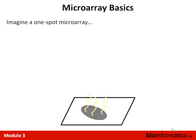To make sure everybody's clear on how a microarray works — imagine a one-spot microarray. The glass slide is called the chip. The DNA extending off the chip is called the probe. And the spot containing a number of identical DNA molecules is called the feature.